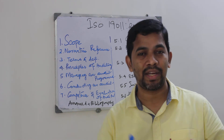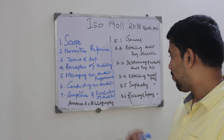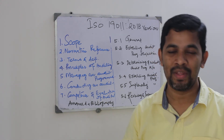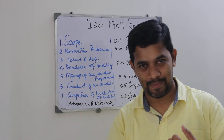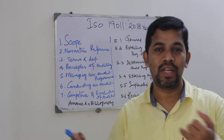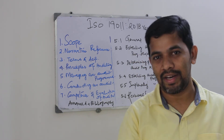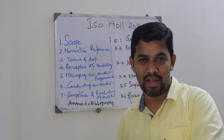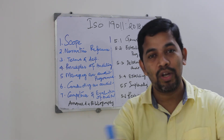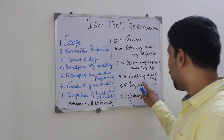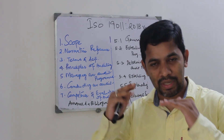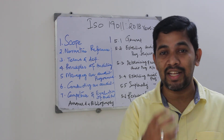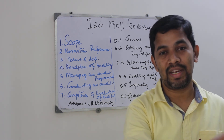Then clause 5.4 is establishing the audit program. The auditor has to be a certified one — only those who are certified can conduct an audit. The auditor shall not be from their own function; for example, if I belong to function A, I cannot audit function A, but I can do it cross-functionally. The criteria and the checklist can be aligned to the needs of the function being audited.